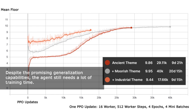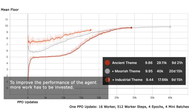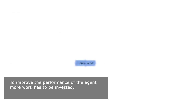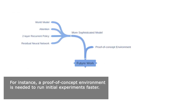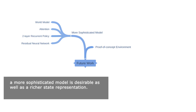Despite the promising generalization capabilities, the agent still needs a lot of training time. The ancient theme was trained on a Tesla V100 and the others on a much slower Quadro K1200. To improve performance, a proof of concept environment is needed to run initial experiments faster. To improve the agent and especially to approach the key puzzle, a more sophisticated model and a richer state representation are desirable.